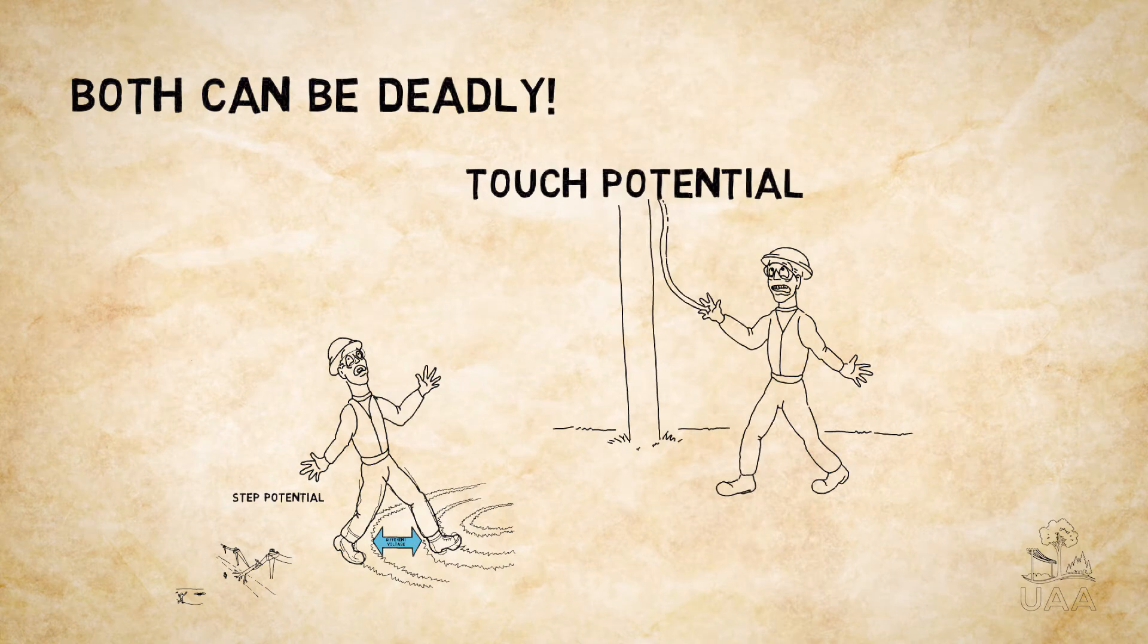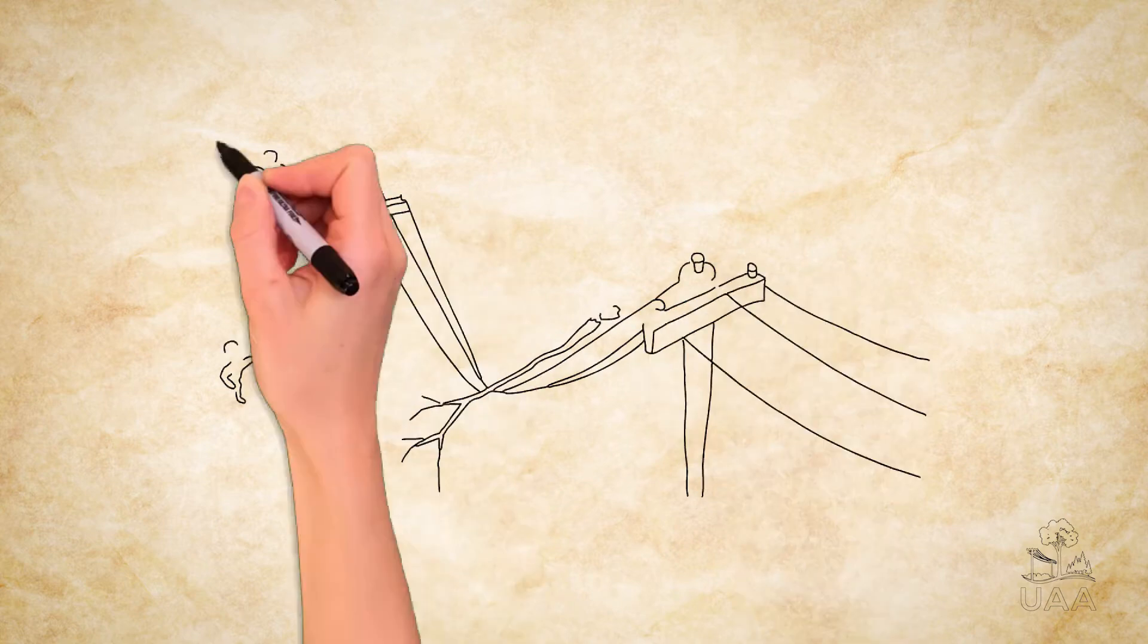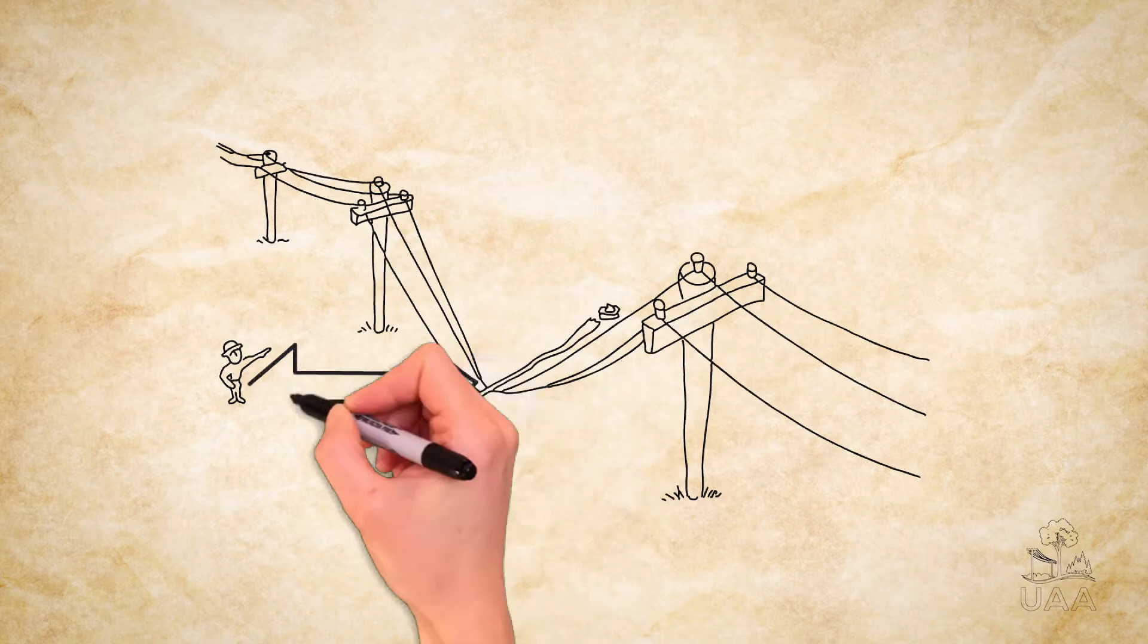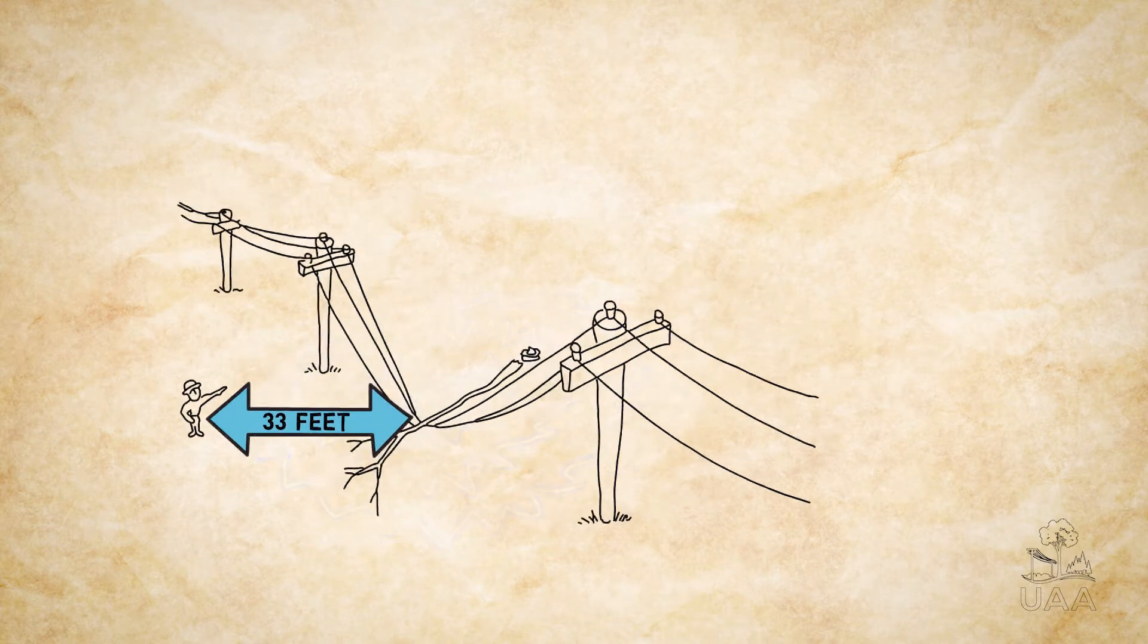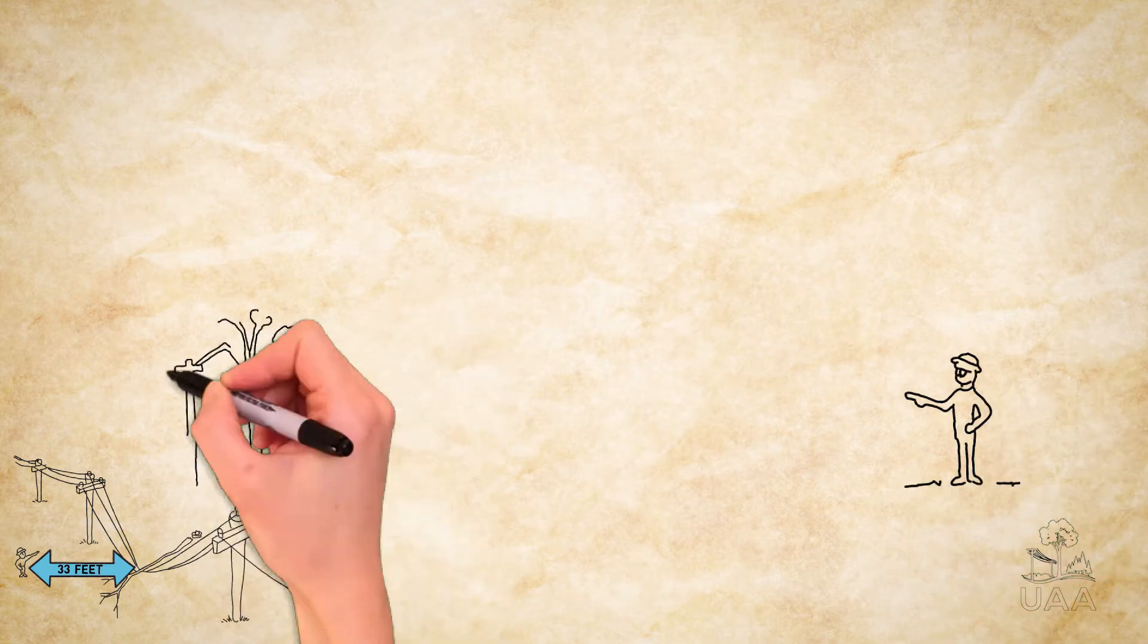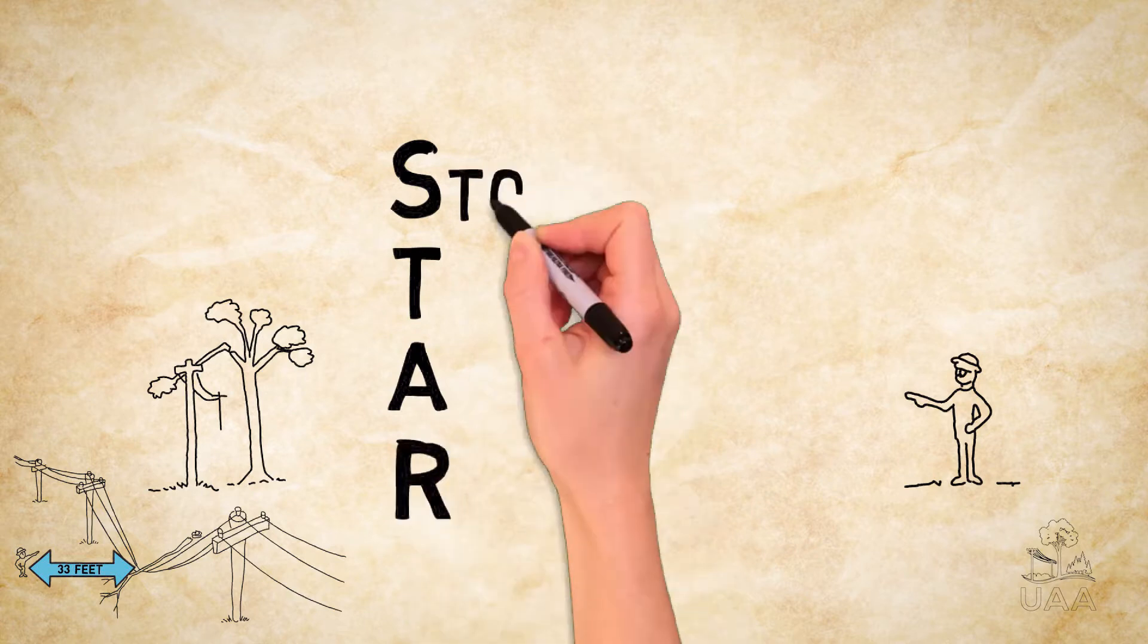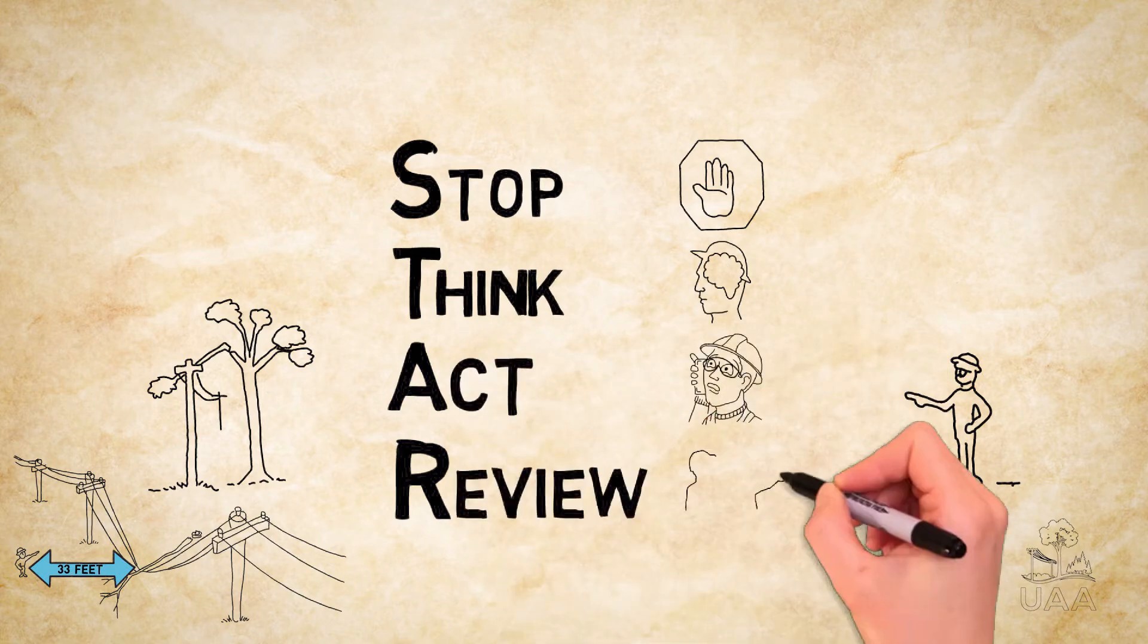That's why it's very important to remember that both step and touch potential can be deadly. In fact, the distance that step potential can be hazardous is greater than most people think. Harmful voltage can flow as far as 33 feet from the center of an impact point, and sometimes even further. So when arborists in the field encounter step and touch potential, it's critical to follow the STAR process: Stop, Think, Act, Review.